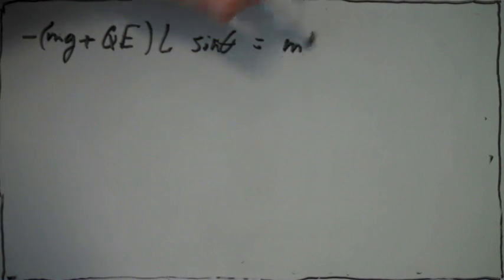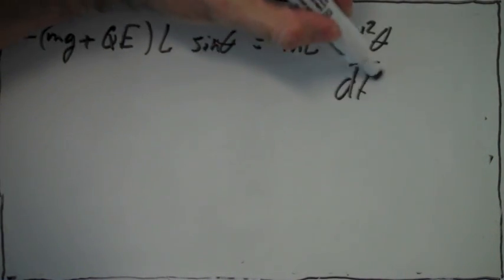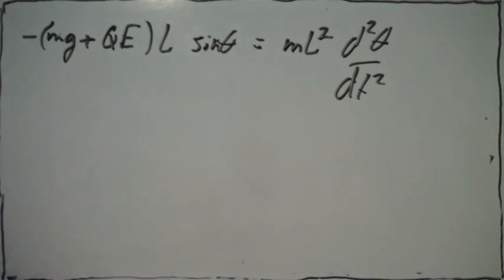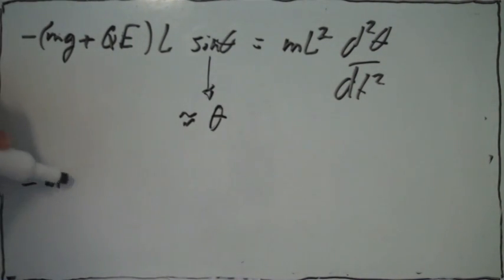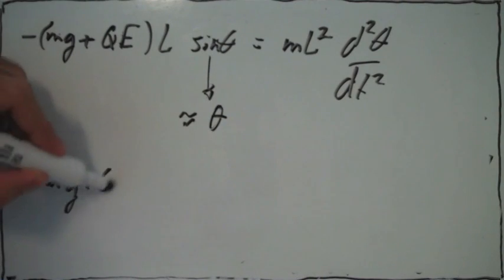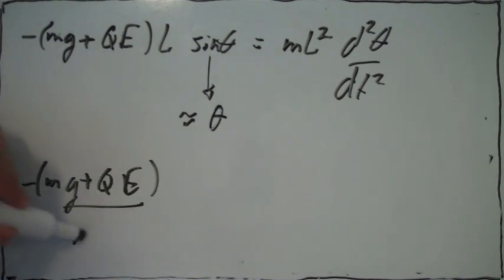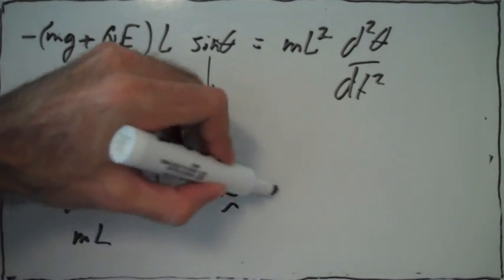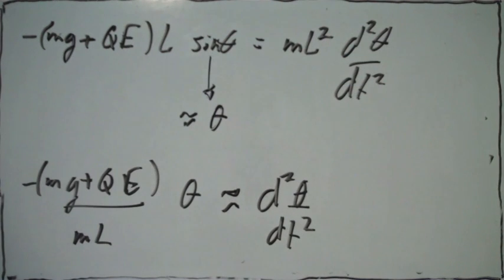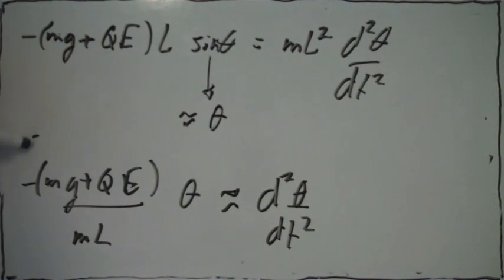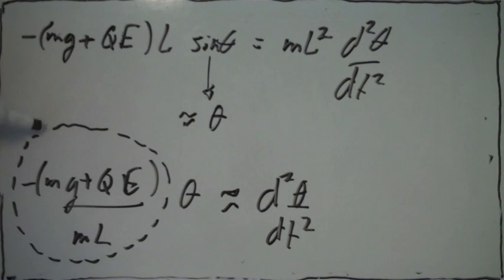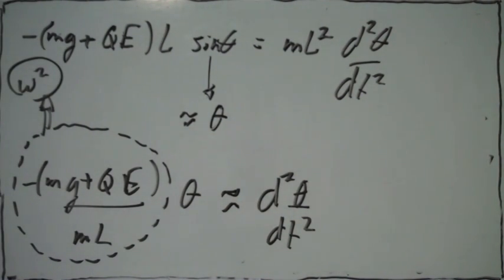That's equal to I times alpha. We're told that the angle is small — only small displacements from the vertical — so the sine of the angle is almost equal to the angle itself. Now the equation becomes the equation of a simple harmonic oscillator, in which this term right here is omega squared, the angular frequency squared.